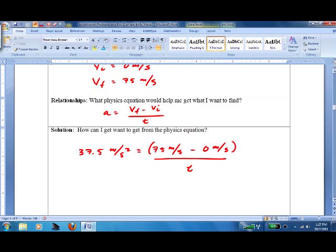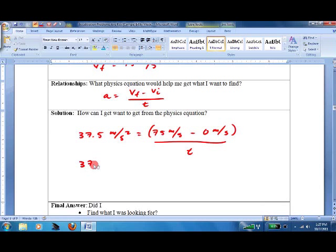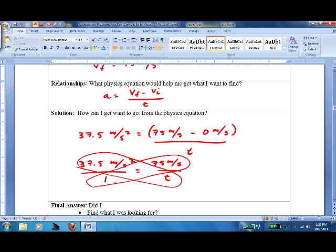37.5 meters per second squared equals 75 meters per second minus 0 meters per second over T. I'm going to do a little bit of math first. We'll put that over 1, 75 meters per second over T, and I'm going to cross-multiply. So we get 37.5 meters per second squared times T, and that equals 75 meters per second.